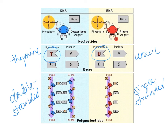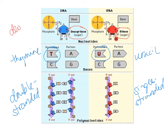That will be important when we get to our next video. Our third difference, which we couldn't see in that last image, is the sugar. DNA has a five-carbon sugar called deoxyribose. RNA also has a five-carbon sugar, but it has an extra oxygen in it, so it's called ribose. So DNA — deoxyribonucleic acid — has deoxyribose, and RNA has ribose. Those are the three major differences between DNA and RNA.